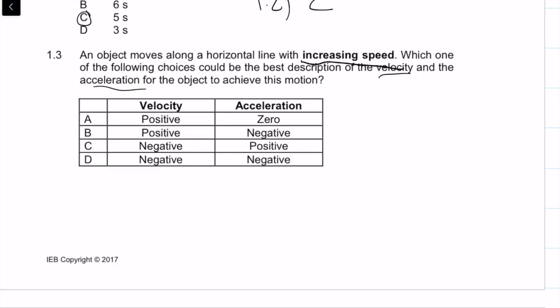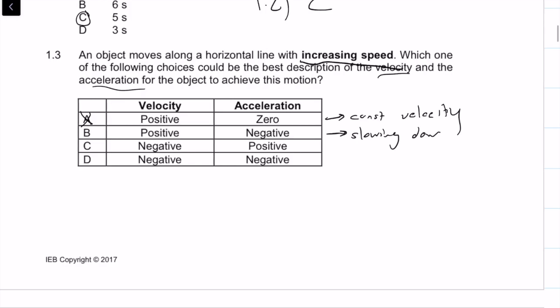If we have a positive velocity with zero acceleration, that means we have constant velocity, so the speed cannot be increasing — that option goes out. If we have a positive velocity and a negative acceleration, it means the car is slowing down, so that can't be the case because we have increasing speed.